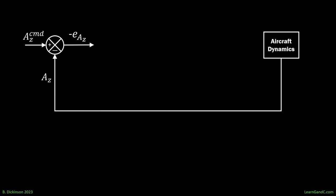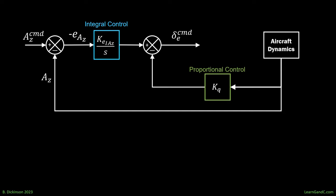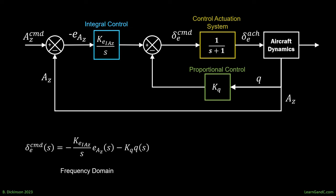Acceleration tracking is achieved with a simple proportional integral control architecture. Let's start with acceleration error, then integrate and scale by a gain. Now, we also add a proportional control to pitch rate. We add the two signals together, and the result is an elevator command that goes to the actuation system that produces achieved elevator position, which affects the aircraft dynamics, which outputs acceleration and angular rate. In the frequency domain, the controller is an algebraic expression. In the time domain, it's a differential equation.